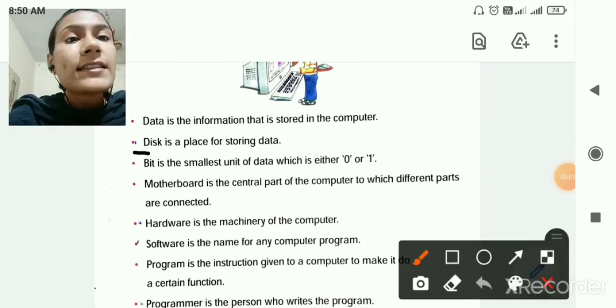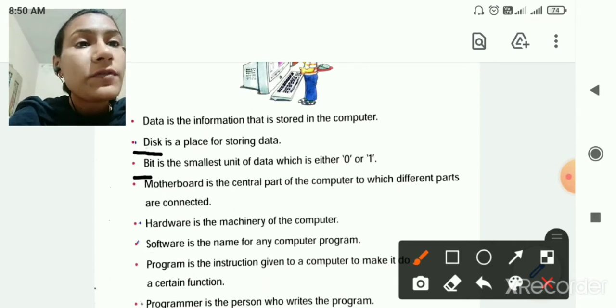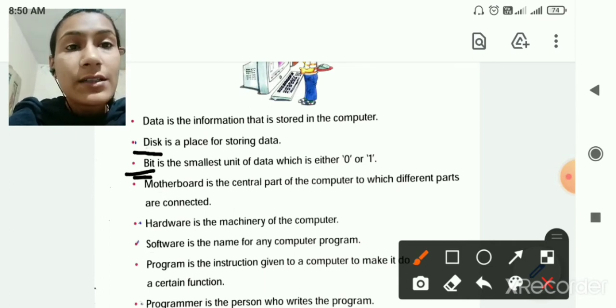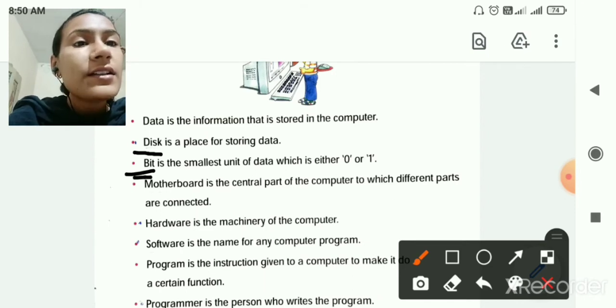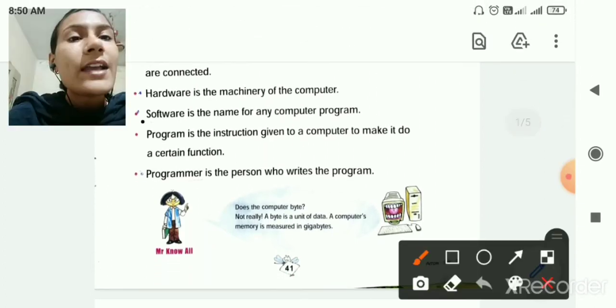Then disk is the place for storing data. Bit is the smallest unit of data which is either 0 or 1. Motherboard is the central part of the computer to which different parts are connected. Then hardware is the machinery of the computer. Then software is the name for any computer program.